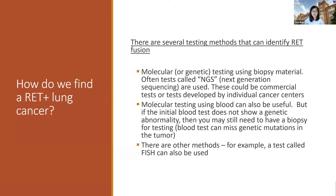So how do we find this particular type of lung cancer? There are several methods that can be used. Most traditionally, these are done using biopsy materials and the tests are typically referred to as molecular or genetic tests. You may have also heard the term NGS, which is short for next generation sequencing. These all refer to different tests that we use as doctors to look at the genetic makeup or genetic abnormalities of the particular tumor. These can be commercial tests or tests developed by individual cancer centers.